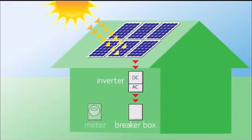When sunlight hits the PV panel, it creates direct current electricity. The direct current then flows through an inverter that converts it to alternating current, which is the type of electricity used in homes.